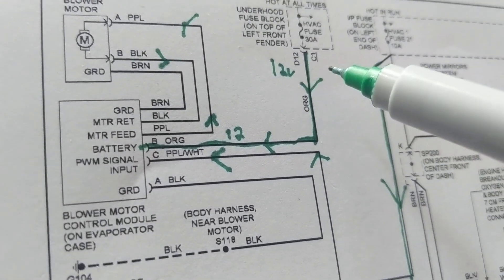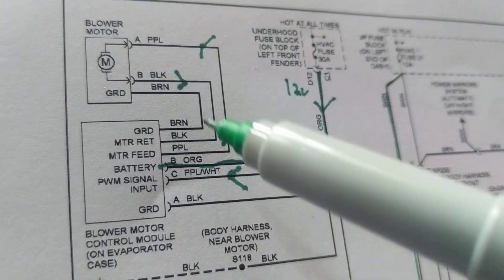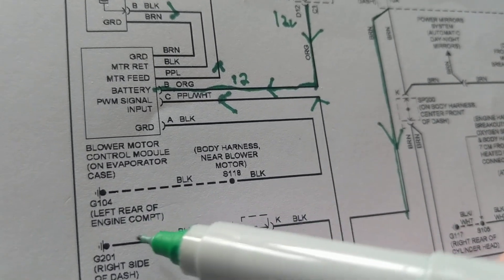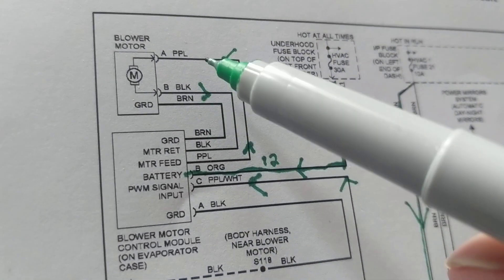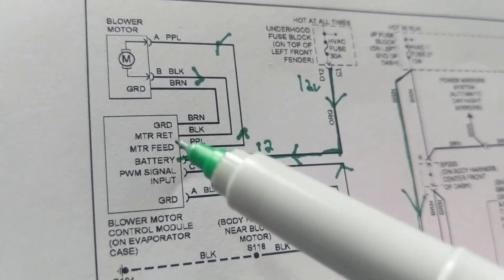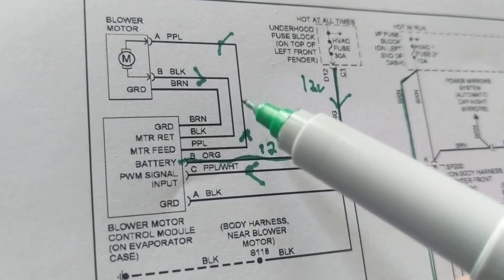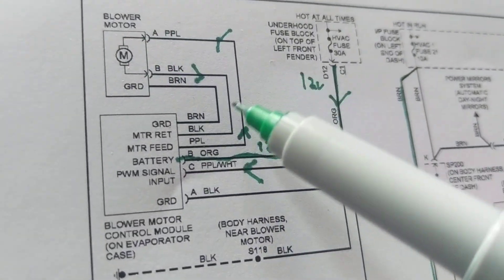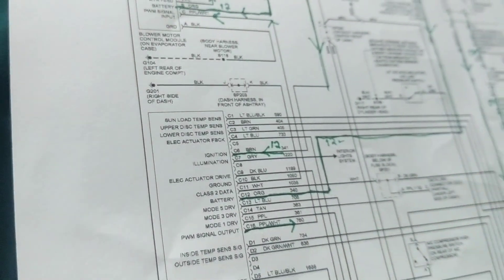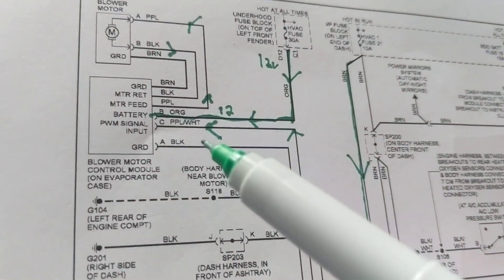We need 12 volts going through this orange wire — the arrows indicate current flow. Number two, we have the ground going to a physical ground, the black wire going to G104, located at the left rear of the engine compartment. Now we have two wires in the blower motor. A is purple and B is black — one is the motor feed and one is the motor return. The purple wire goes in as the motor feed, comes out as the motor return, and ground goes to ground, probably some housing.